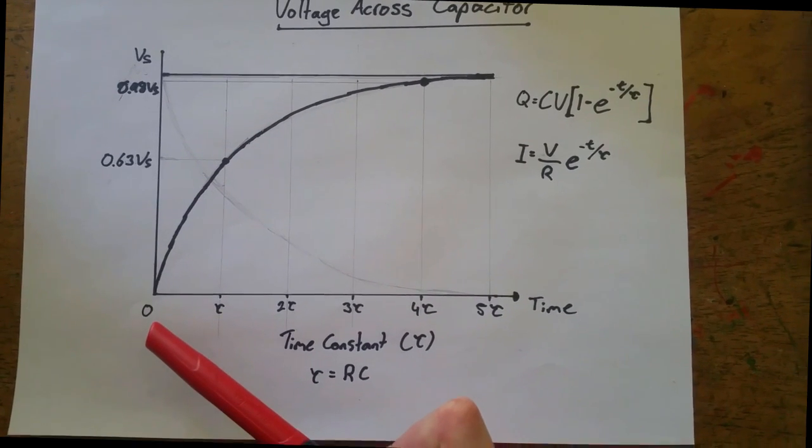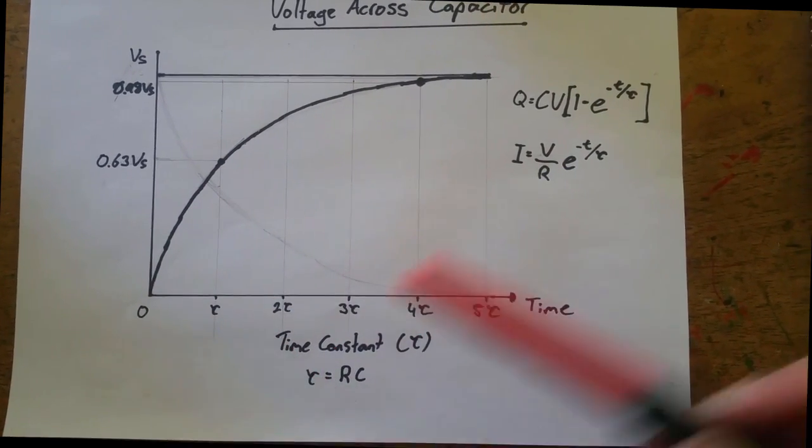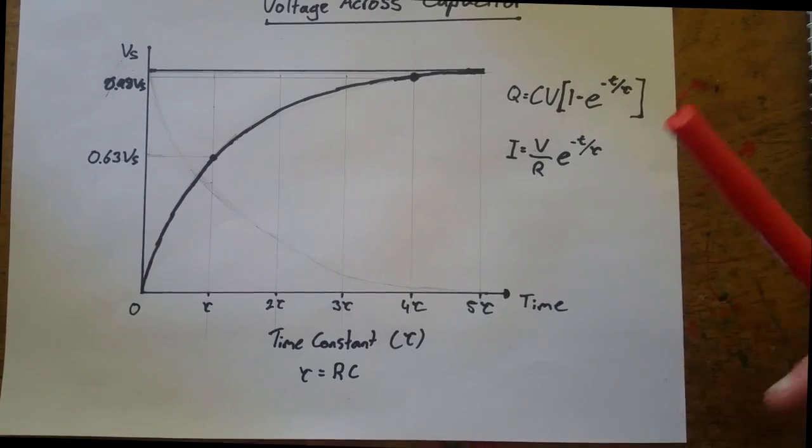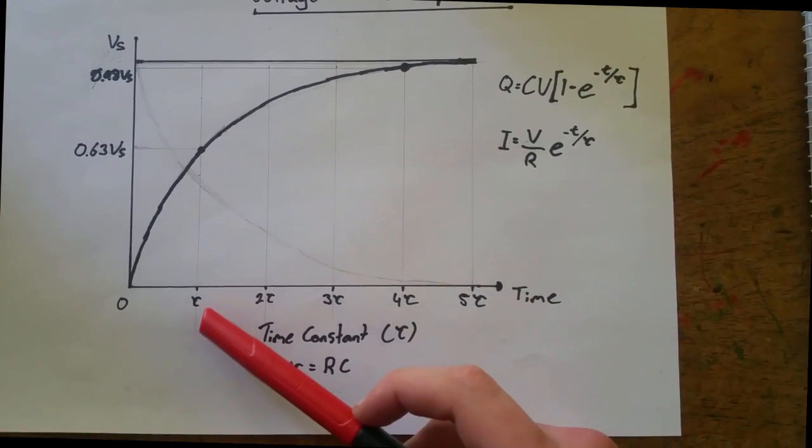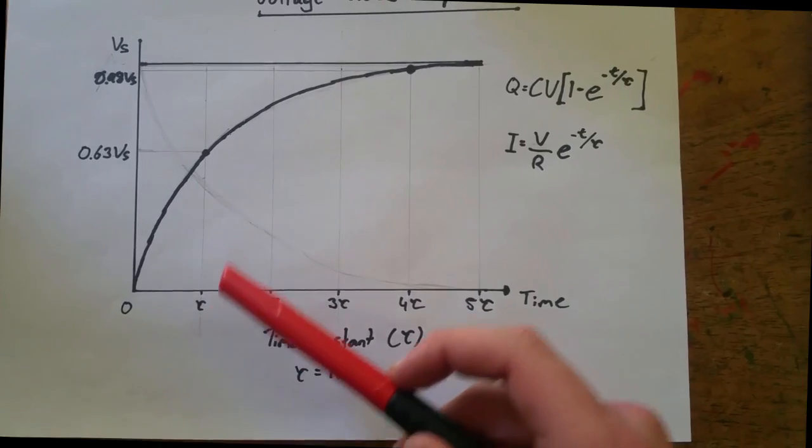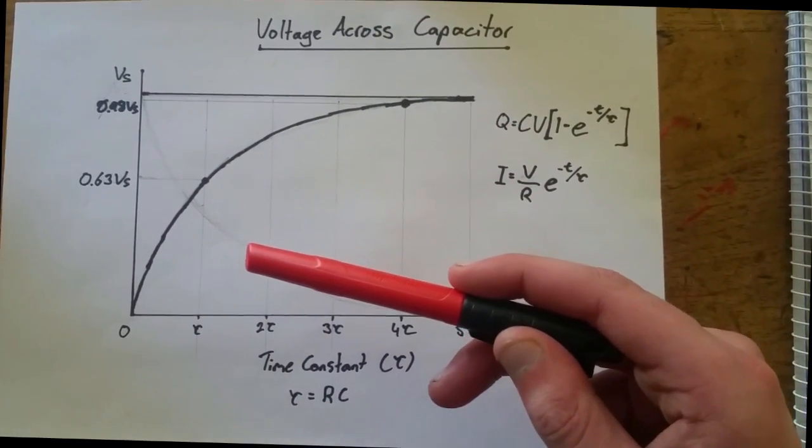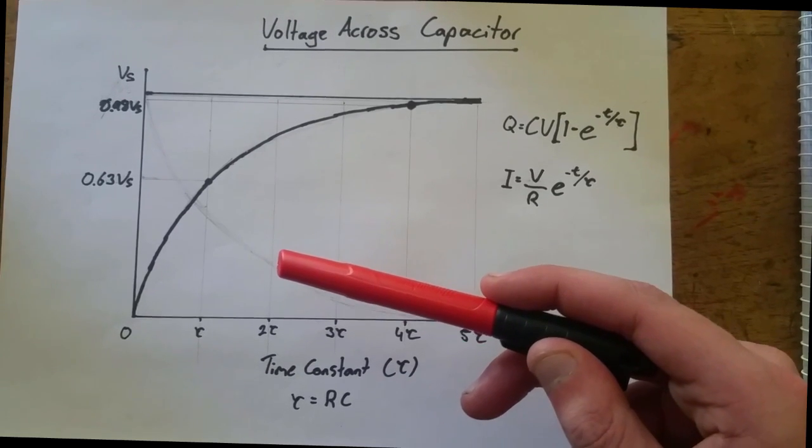At time equals zero, it can be said that the capacitor acts as a short circuit. At the first time constant, the voltage across the capacitor becomes approximately 63% of the sourced voltage.